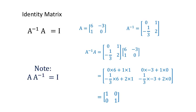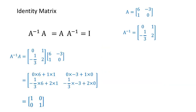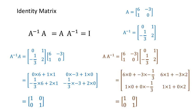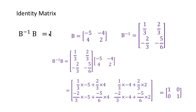And just to show it's not a fluke — A times A inverse, the same way, row times column, row times column, row times column, row times column, gives you 1, 0, 0, 1 as well. Here's another example to prove that it still works: B inverse times B gives you 1, 0, 0, 1.